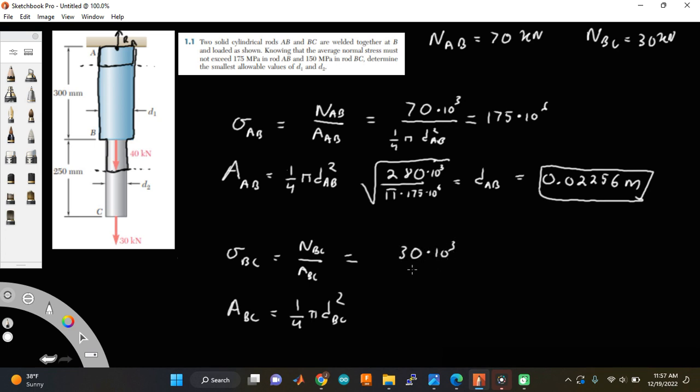so multiply by 1,000 to get it to newtons, divided by one-fourth pi DBC squared. And this has got to equal 150 times 10 to the sixth pascals. And I solve for DBC and multiply, or I could actually just bring this to the top is what I usually do. So 120 times 10 to the third over pi times 150 times 10 to the sixth.